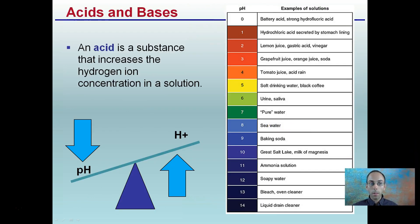Continuing on with acids and bases, an acid is a substance that increases the hydrogen ion concentration in a solution. So our acids here are pH of 0 to just under 7. Hydrochloric acid, lemon juice, grapefruit juice, tomato juice, soft drinks, urine, saliva, coffee, soda, vinegar - all of these are examples of acids. As the pH decreases and becomes more acidic, the hydrogen ion will increase. These lower pH levels will have higher concentration of hydrogen ions.